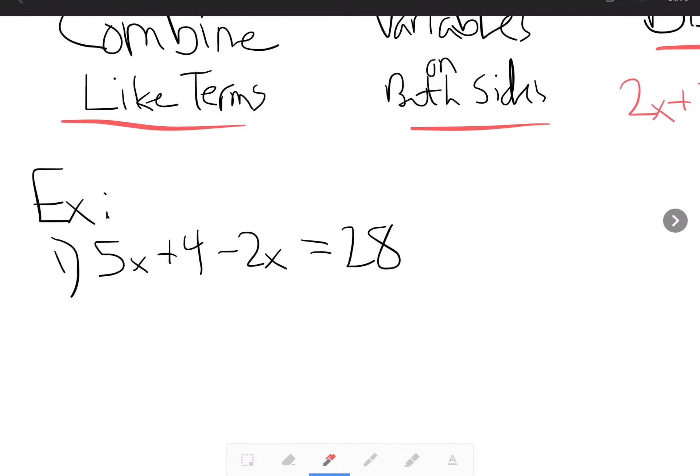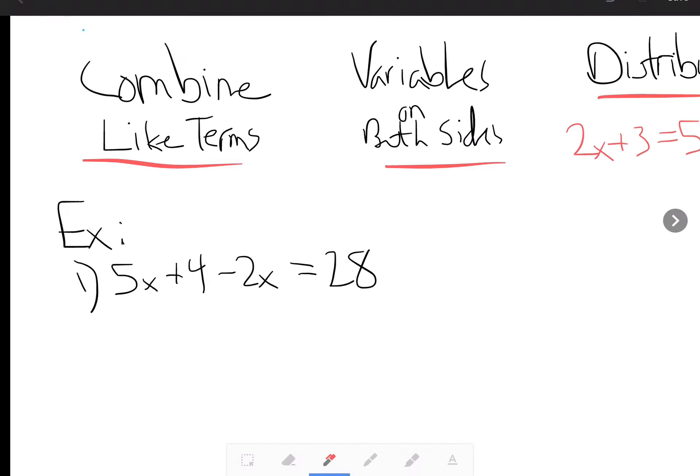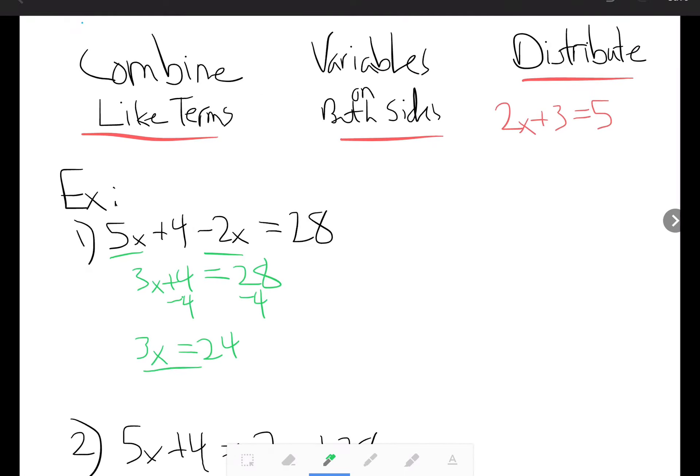So let's take a look at what we have here for our first example. This first one is all about combining like terms. So here we have 5x negative 2x on the same side of the equation. So our first step is to combine these to get 3x plus 4 is equal to 28. Now we've made this look like a two-step equation. Next step would be to subtract 4 from both sides and we have 3x is equal to 24. Keep on simplifying by dividing both sides by 3, and x ends up equaling 8.